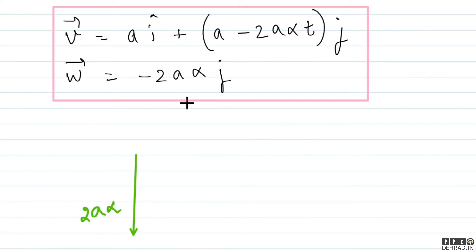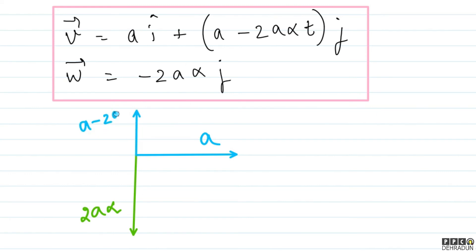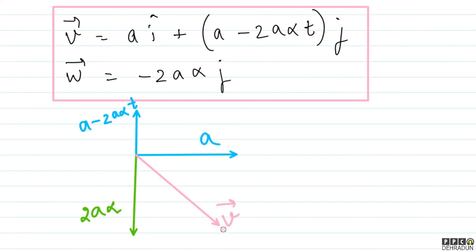The acceleration vector W lies along the negative y-axis with magnitude 2aα. The velocity vector has two components: along x with magnitude a, and along y with magnitude (a − 2aαt). For the angle between V and W to be 45°, the velocity vector must point in a direction making 45° with the negative y-axis.